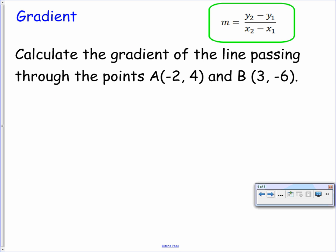So here's an example for you. I've put the formula for gradient in the top corner. This formula you need to remember: m equals y2 minus y1 over x2 minus x1. We want to calculate the gradient of the line passing through the points A at negative 2, 4 and B, 3, negative 6. The first thing we should be doing here is to label the coordinates.